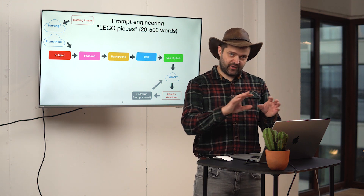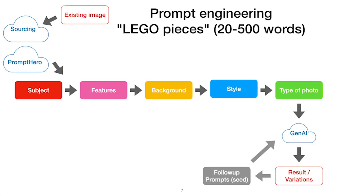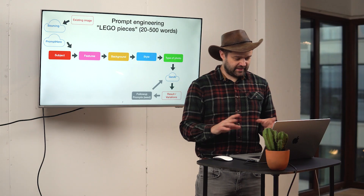How to write a prompt: you start with the subject, which is the main focus of the image — it could be Superman, a 30-year-old woman, a coffee mug. Then the features: small details that change the subject, like looking at the camera, or flowers on the coffee mug. Then the background: is it a cloudy day, a dramatic scene, morning, twilight? Then the style: realistic, stylized, impressionist, 3D, portrait, bright colors, cartoon. Finally, the type: photo, line drawing, pixel art.